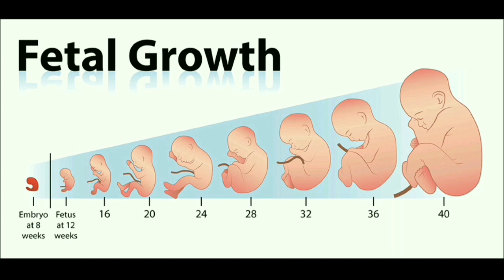This diagram shows fetal growth. When an unborn baby is about 8 weeks old, it is called an embryo, and after 8 weeks it is a fetus. It is during the embryonic period that the embryo transfer occurs. All fetal development — that is, after 8 weeks — occurs in the mother's womb.